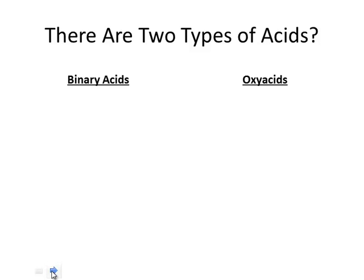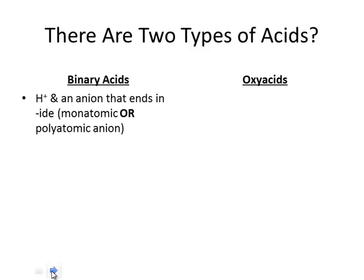Here is the way we tell the difference. Binary acids are H+ and an anion that ends in -ide. Normally it's going to be monatomic — something straight from the periodic table, a nonmetal — and when we change those nonmetals to anions, we put the -ide ending on it. So fluorine becomes fluoride, chlorine becomes chloride, etc. Or it can also be a polyatomic anion that has an -ide ending, like cyanide.